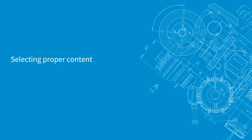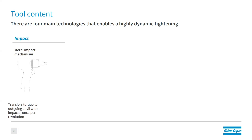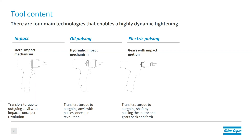Now we move into selecting proper content. There are four main technologies for tightenings. First is impact — a pneumatic tool with an anvil constantly hitting to deliver higher torques with less reaction. Second is hydraulic impact — oil helps with the anvil hit, pulsing per revolution. Third is electric pulsing — fairly new, taking ideas learned from impact and oil pulsing and moving into electronic pulsing where DC drives the anvil to deliver higher torques with less reaction by pulsing the motor and gears back and forth.